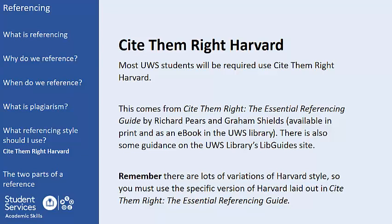Cite Them Right is the referencing style used by the vast majority of students at UWS. This style is laid out in a book called Cite Them Right: The Essential Referencing Guide by Richard Pears and Graham Shields. While the library's LibGuide site also has guidance on using Cite Them Right, the book is much more comprehensive and is the recommended place to go for any information on this referencing style. Remember that Harvard is a referencing style that has many different versions in use at different universities. It is therefore essential that we use Cite Them Right Harvard and not another version of Harvard which we might find guidance on elsewhere. Cite Them Right: The Essential Referencing Guide is where Cite Them Right Harvard originates and should therefore be our key source for referencing guidance. The book is available in print and as an e-book in the UWS library, but I would advise buying your own copy in first year as you will use it a lot.